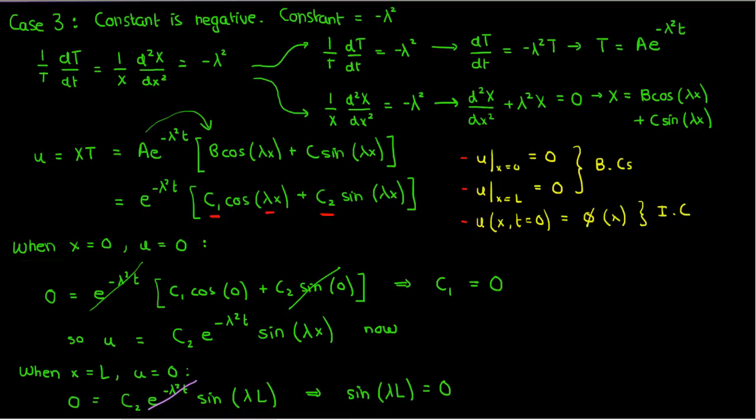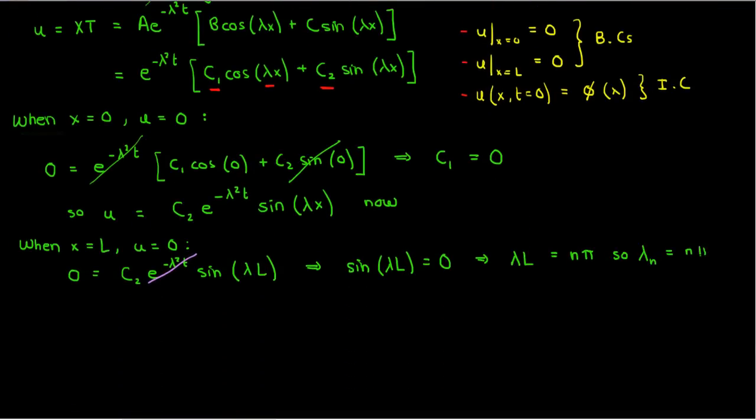Now, when is sine zero? Well, from basic trigonometry, you know that sine is zero whenever we're taking the sine of an integer multiple of pi, because sine pi is zero, sine 2 pi is zero, and so on. It follows then that lambda times L is n times pi. So lambda sub n is n times pi over L, which means that the solution corresponding to lambda sub n is u_n equals c2 times the exponential of negative lambda n squared t times sine of lambda sub n times x, where n is a positive integer.